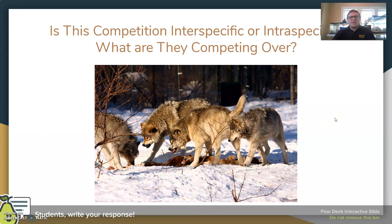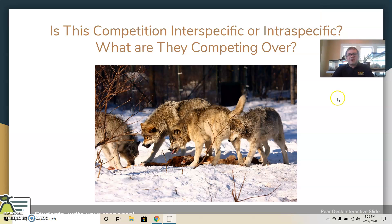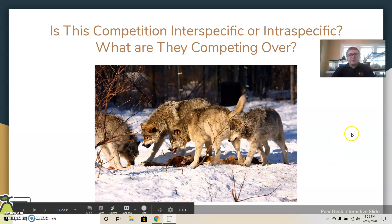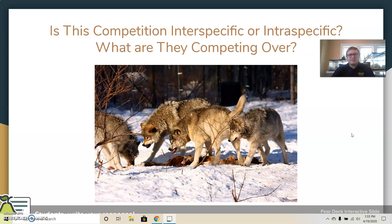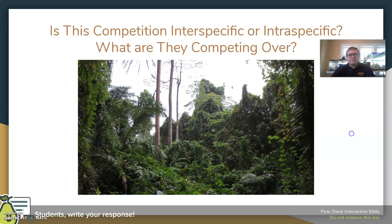Let's look at some examples of competition. Pause the video and consider: is the competition interspecific — between different species — or intraspecific — between members of the same species? And what are they competing over? Here's our first example with some timber wolves. Here's our next example — a rainforest area with different plants. Consider whether the competition is interspecific or intraspecific, and what they are competing over.